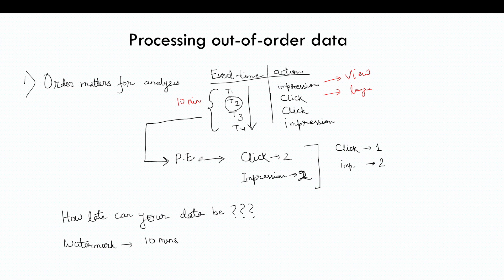Now if the processing engine wants to aggregate — let's say the question is: give me the number of impressions and number of clicks between timeframe t1 and t4. The correct result will be click two and impression two.